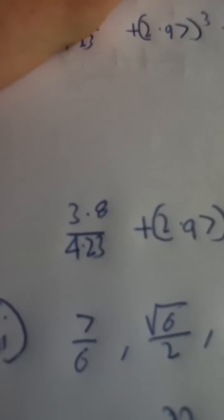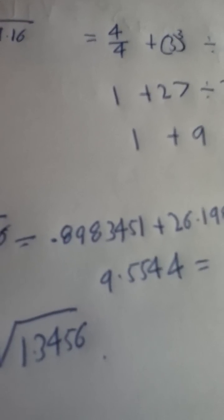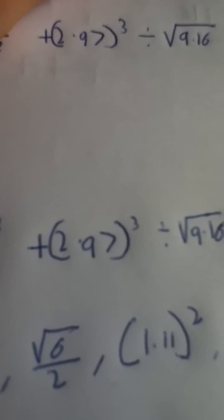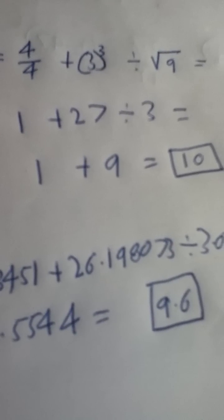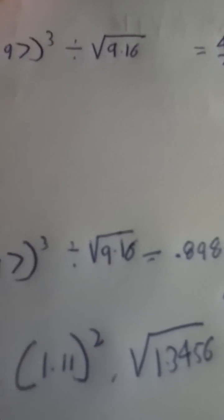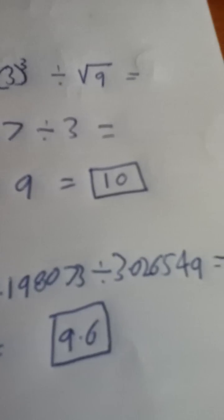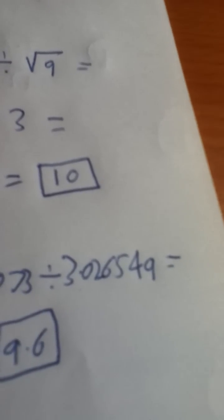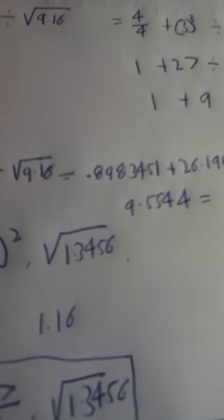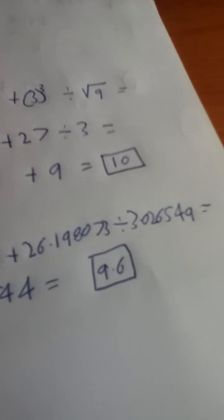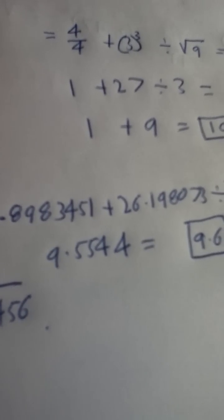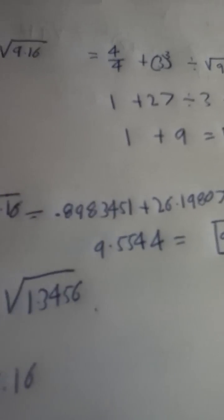So you get 3.8 divided by 4.23 gives you 0.8983451. And 2.97 cubed gives you 26.198073 and 9.16 gives you 3.026549. And then when you add them together you get 9.5544 and the answer to one decimal place that's 9.6.